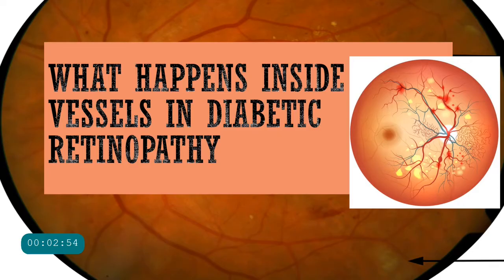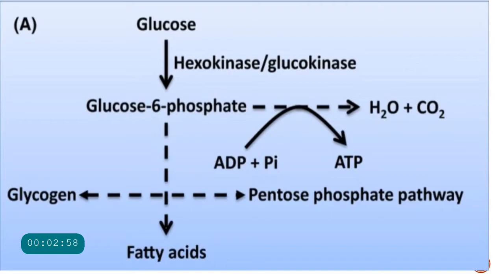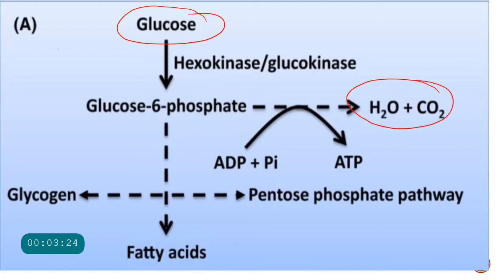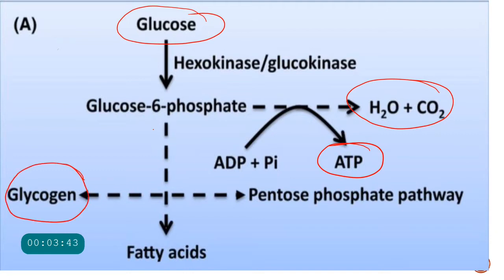Let us see what exactly happens inside the vessels in diabetic retinopathy — for that you have to go back to your basics of biochemistry. In a normal individual, or a diabetic patient with good sugar control, glucose basically enters glycolysis and then the Krebs cycle, and is finally converted into water and carbon dioxide, generating ATP. Whatever excess glucose remains is stored as glycogen, and a part of glucose as glucose-6-phosphate is shunted to the pentose phosphate pathway.